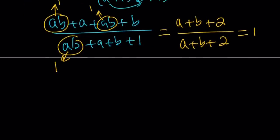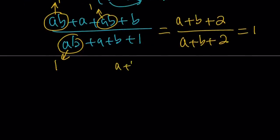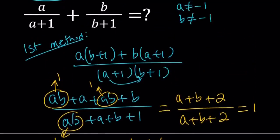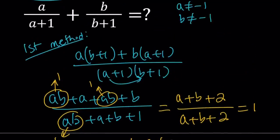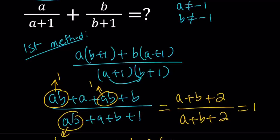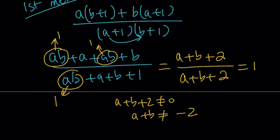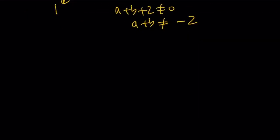As long as a plus b plus 2 does not equal 0, but it just means a plus b does not equal negative 2. And that's not going to happen, because a and b are both different from negative 1. But what if one of them is negative 3, and the other one is positive 1? Then their sum is negative. So you have to exclude those values. Anyways, let's go ahead and talk about the second method.